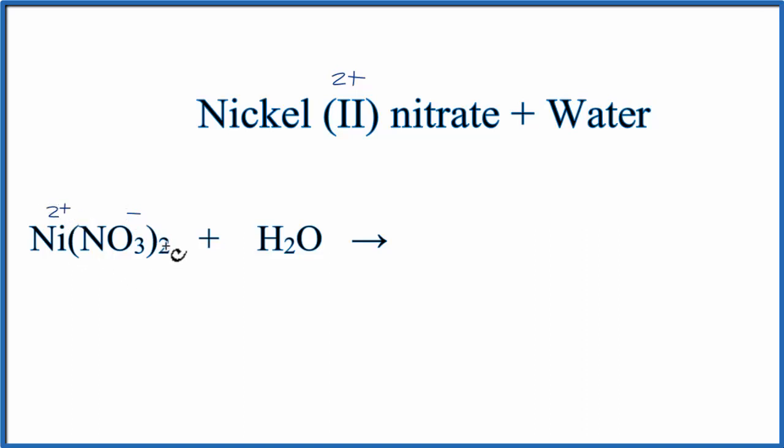So we have +2, and then 2 times -1, that's -2. Those cancel out. It's a neutral compound, and the pluses and the minus are attracted. That's what forms the ionic bond.